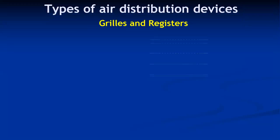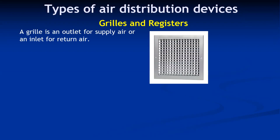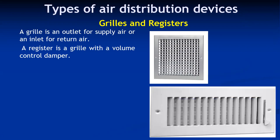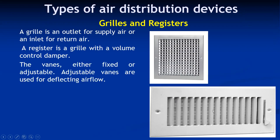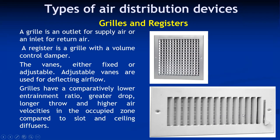The first type is grills and registers. A grill is an outlet for supply air or an inlet for return air — it's like a mesh structure. A register is a grill with a volume-controlled damper. The vanes are either fixed or adjustable; adjustable vanes are used for deflecting the airflow. Grills have a comparatively low entrainment ratio, with a greater drop and longer throw at higher air velocities, lower than that of slot type and ceiling type diffusers.